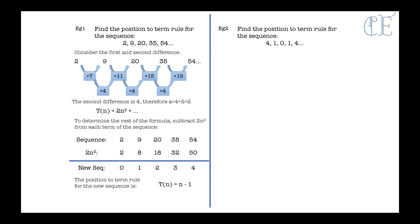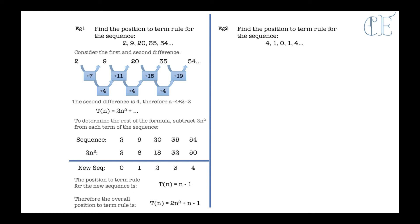The reason for n minus 1 is because n is your term number and the new sequence has 0 as its first value. To get from n equals 1 to 0, I need to take away 1. For the second term, n is 2, and I need to take away 1 to get 1. So the second part added on is n minus 1. Therefore the overall position-to-term rule is 2n squared plus n minus 1.